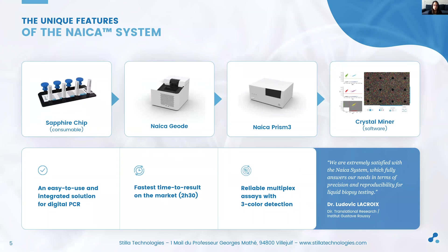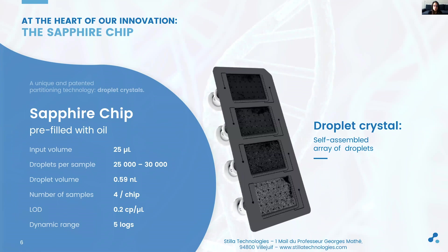Making digital PCR a lab commodity is our mission at STILA, and the NICA system is an easy-to-use integrated solution. The whole workflow takes no more than 2 hours and 30 minutes and requires only a few manipulations. The heart of the innovation is the Sapphire chip, which integrates the droplet crystal technology. It is pre-filled with oil, and the only manual step is to load the PCR mix into the chip. With an input volume of 25 µL of PCR mix, you end up with a droplet crystal of 25,000 to 30,000 droplets of 0.59 nL each. The dynamic range of the NICA system spans five logs, from a limit of detection at 95% confidence level of 0.2 copies per microliter up to 20,000 copies per microliter.